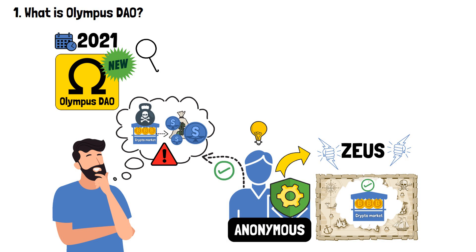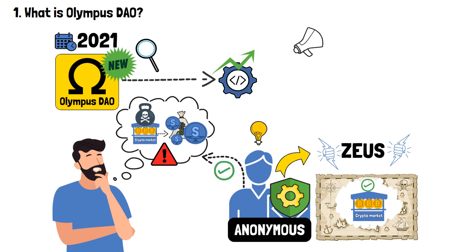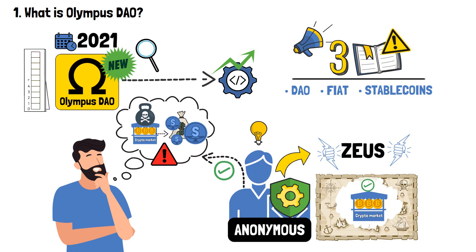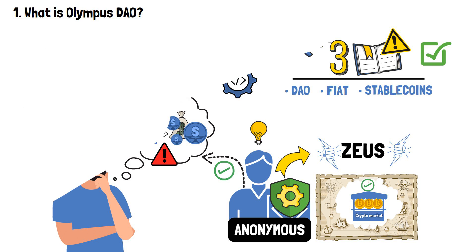As you can see, this is a rather high-tech project. We've just started, but I've already mentioned three concepts that require some extra attention: DAOs, fiat and stablecoins. In order to fully understand what is Olympus DAO, we must make sure everything is clear.